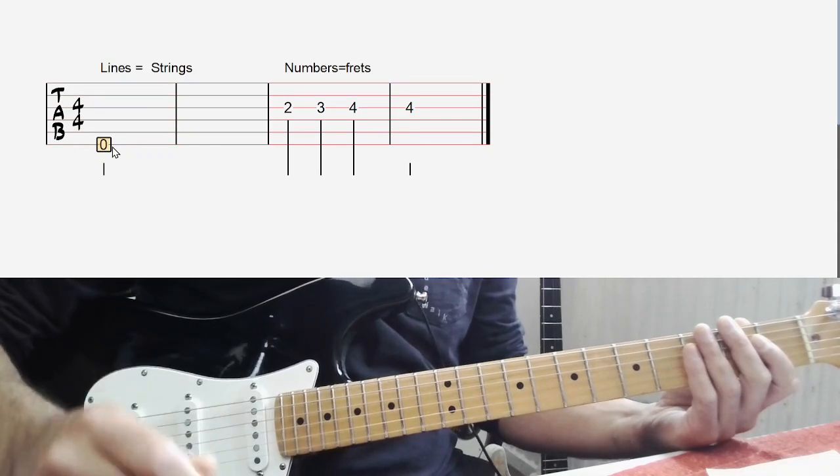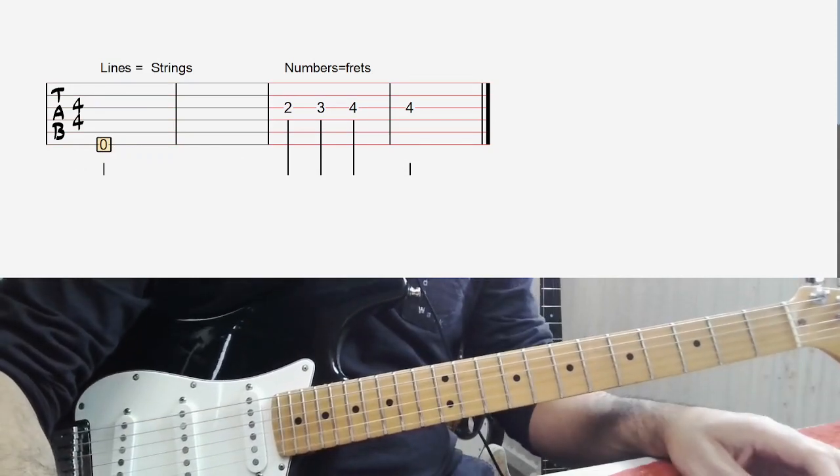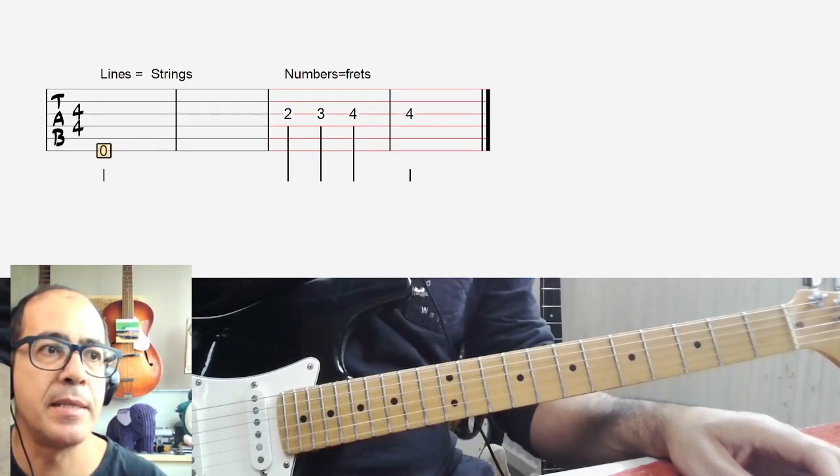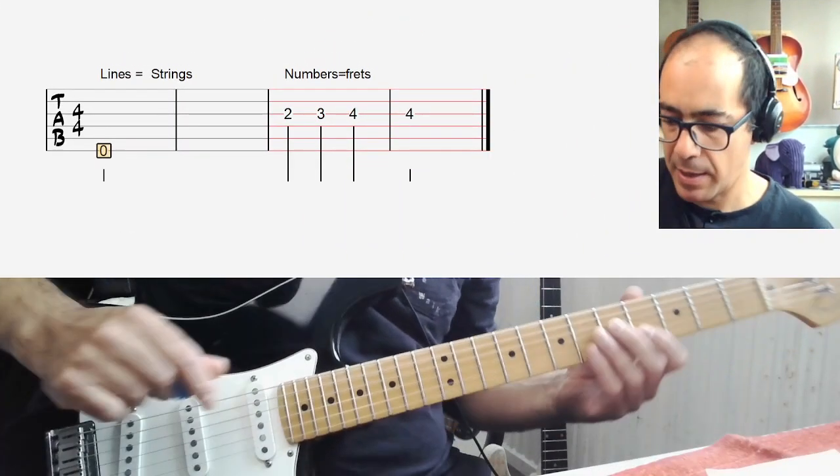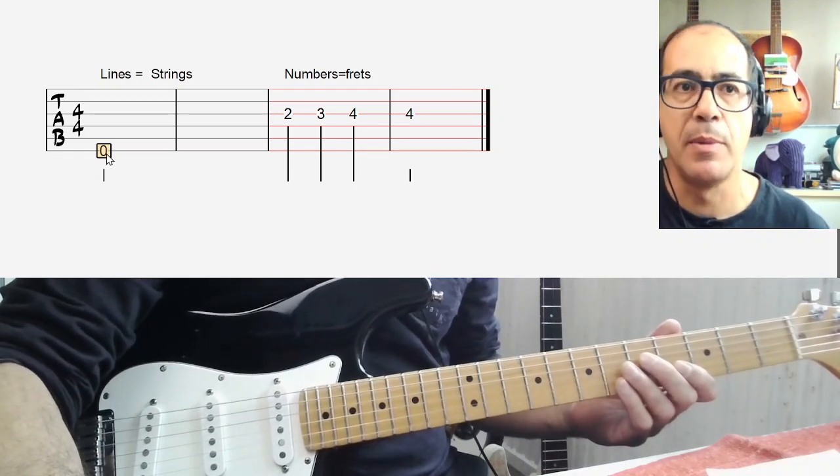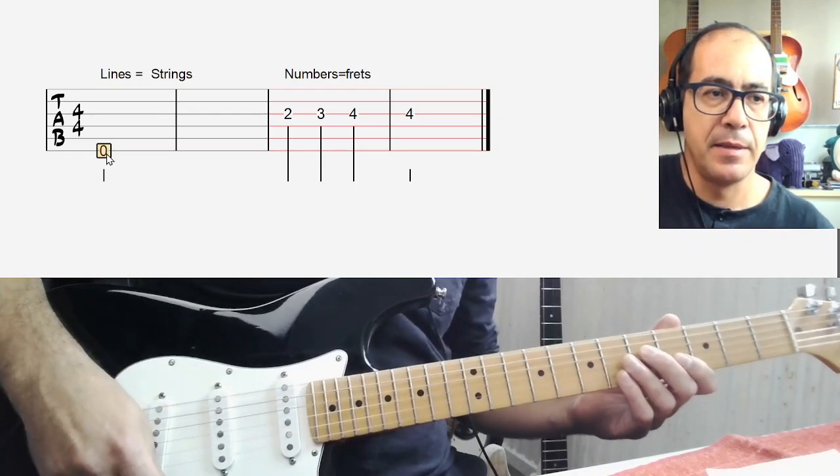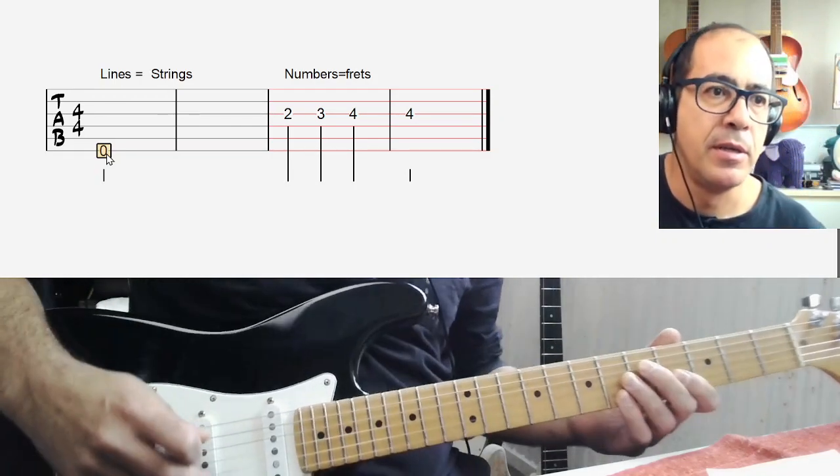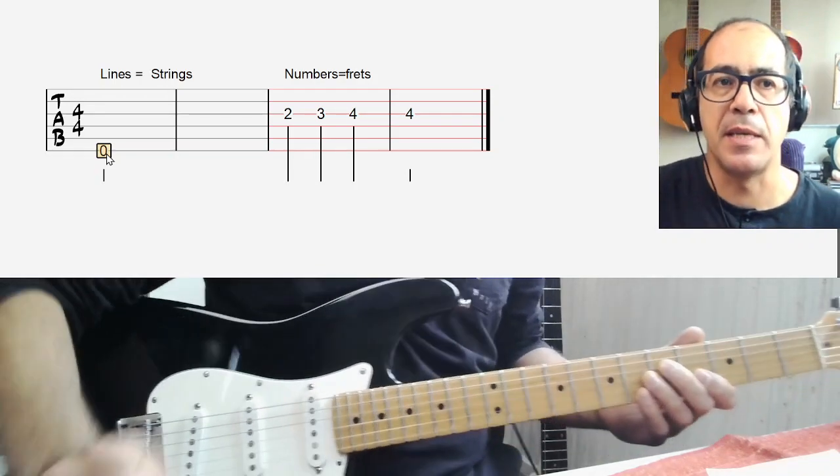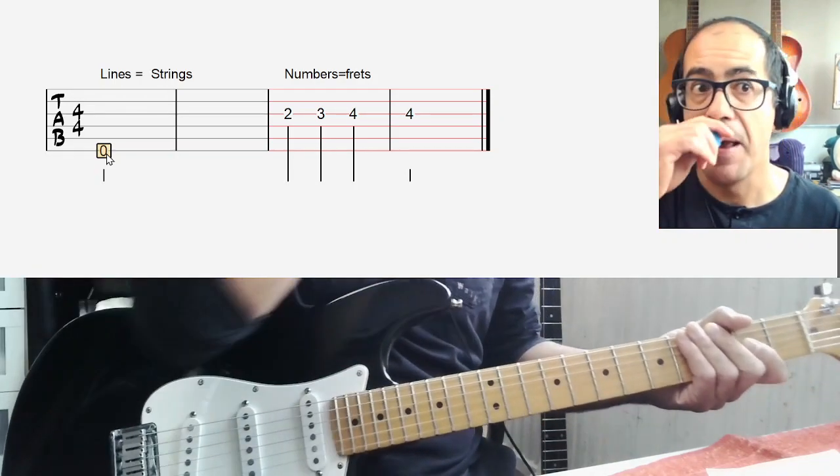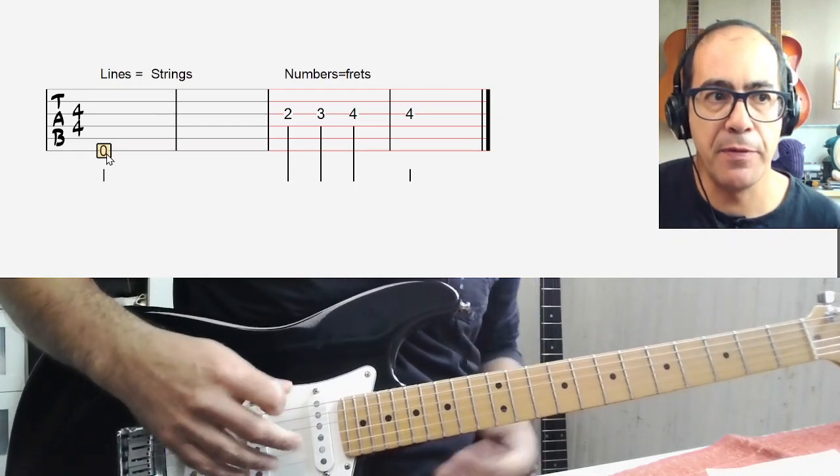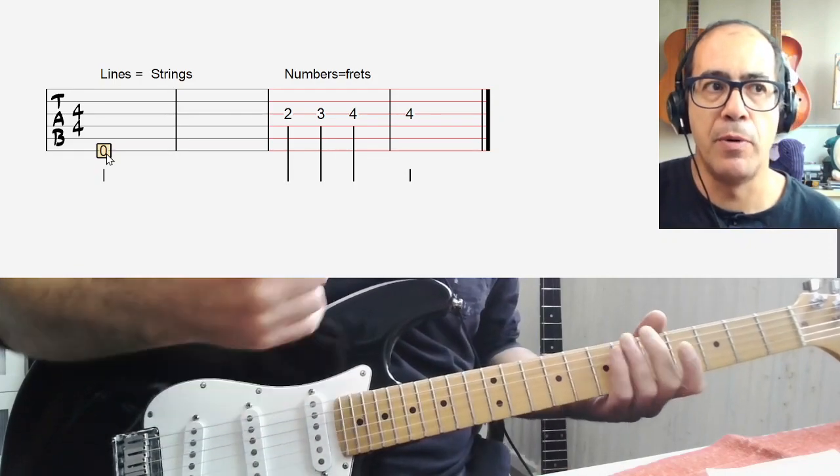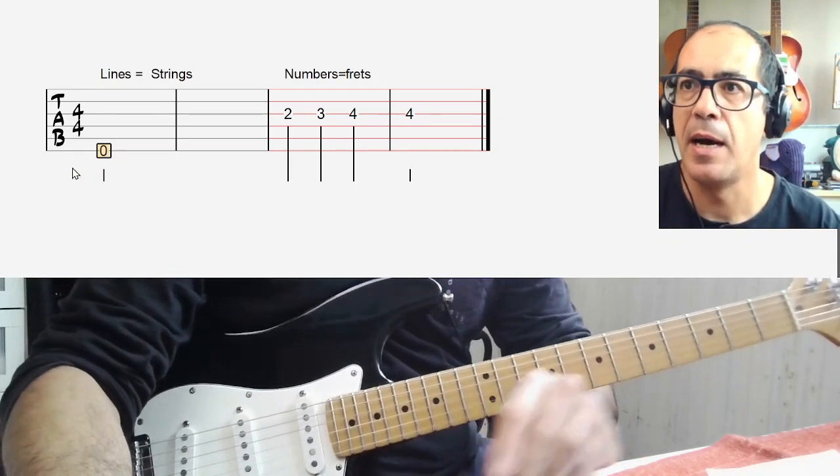So the only confusing thing about this is the fact that top is up and down is up and up is down. What I'm trying to say is that the string that is written on the bottom line is this thick low string, which provides us with a low sound, but it's further from the ground. It's higher up, physically speaking. But what matters is the note that comes out of it. So if I compare this string and that string, this is the high one, this is the low one. And that's why they are written high and low.